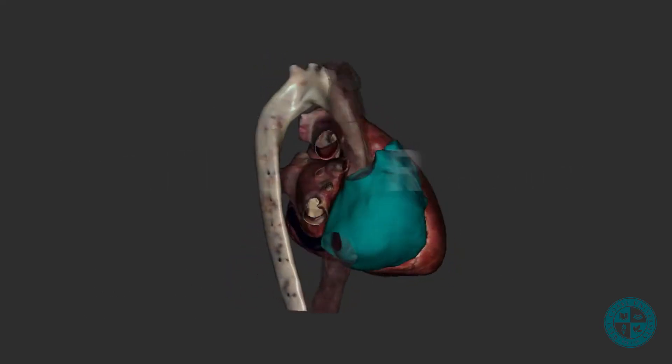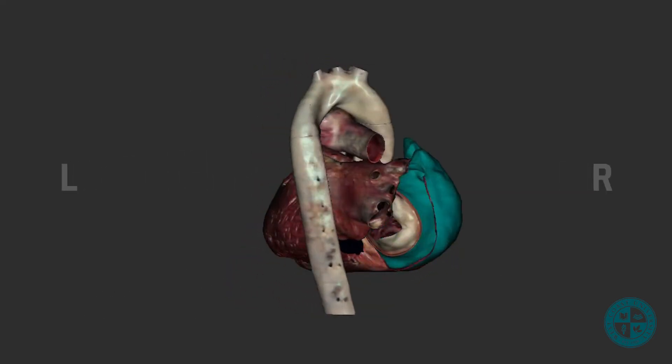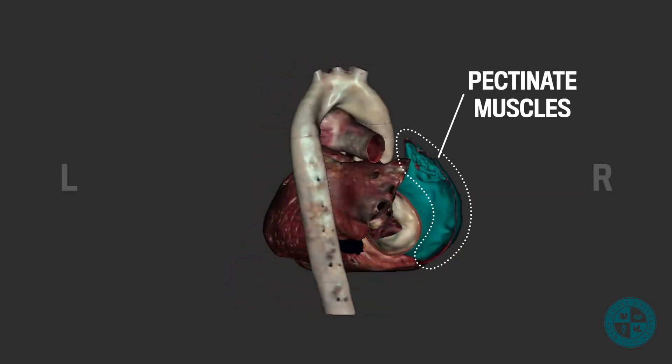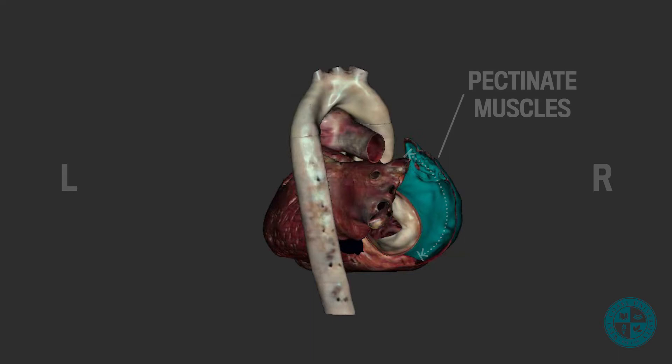You will notice in the right atrium there are distinct ridges referred to as the pectinate muscles. These muscles extend from the atrial appendage and all along the anterior surface of the atrial wall.